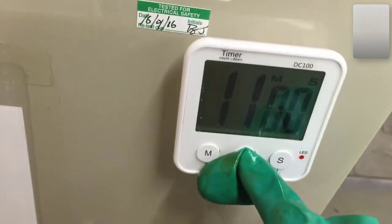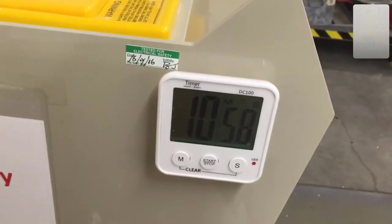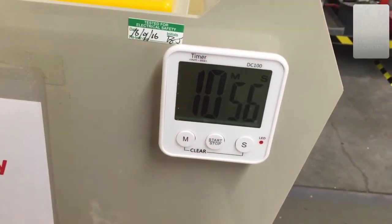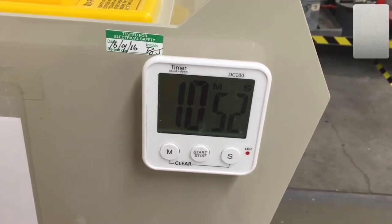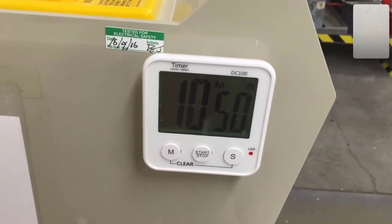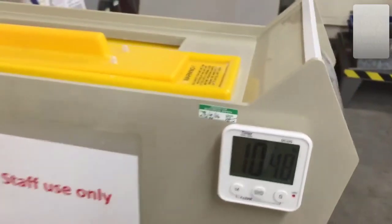We're going to set our timer to anything from 7 minutes if I'm using a really fresh new batch of etchant up to about 15 minutes if it's starting to get a bit tired. Here you can see I've set it for 11 minutes.